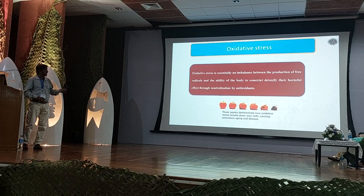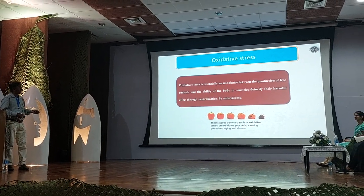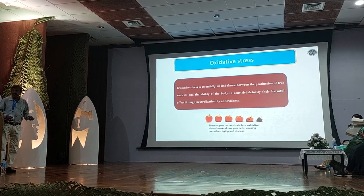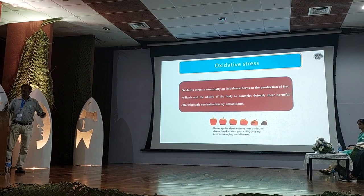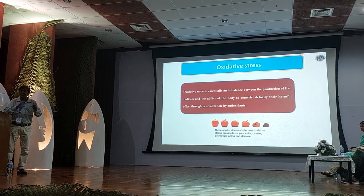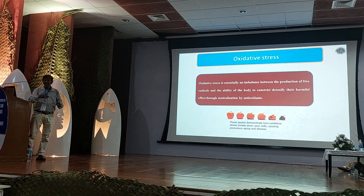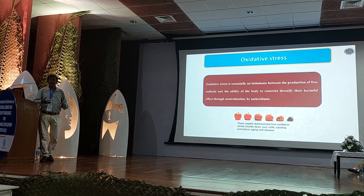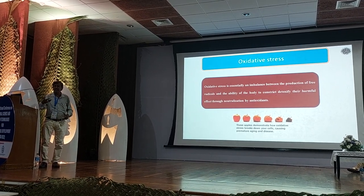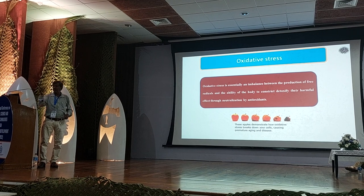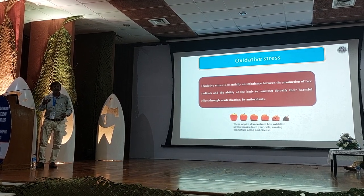Oxidative stress is essentially an imbalance between the production of free radicals and the endogenous ability to destroy these free radicals — that balance system is also deviated. As an example like an apple, our health status is also deteriorated due to oxidative stress. Aging is also advanced — not chronological aging, but physiological aging. The functional activity of our body decreases.